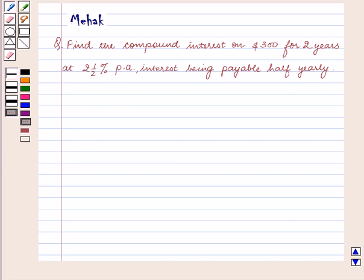Hello and welcome to the session. In this session we are going to discuss the following question: Find the compound interest on $300 for 2 years at 2.5% per annum.